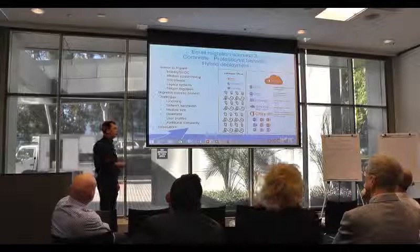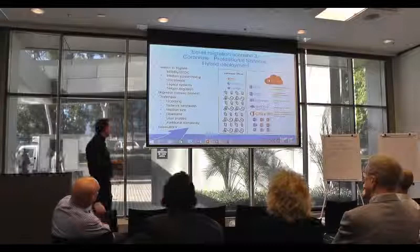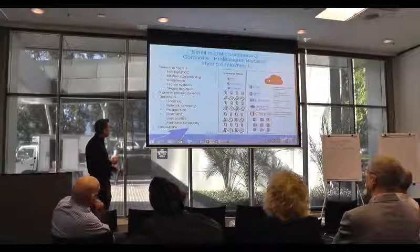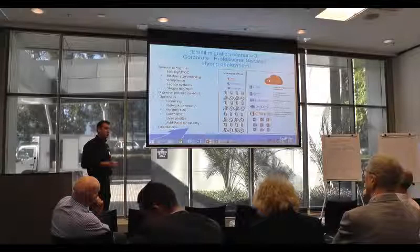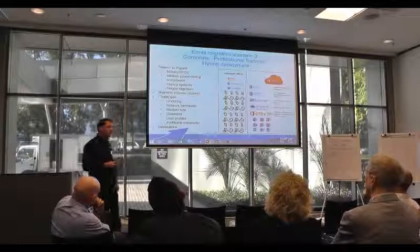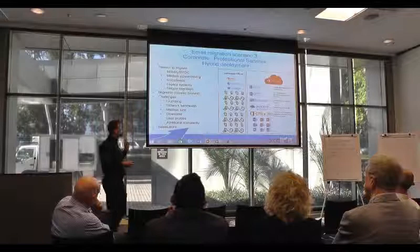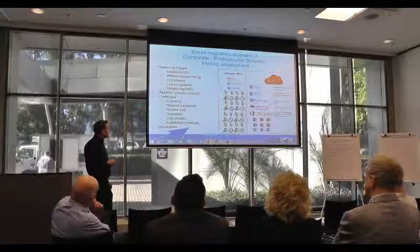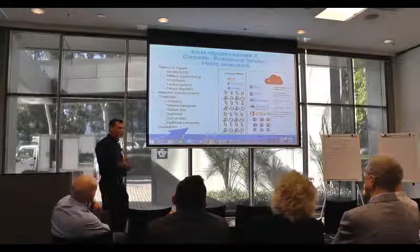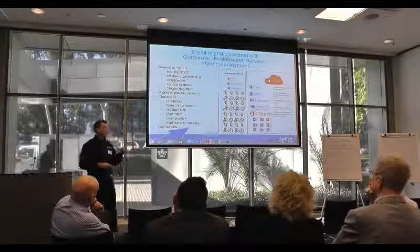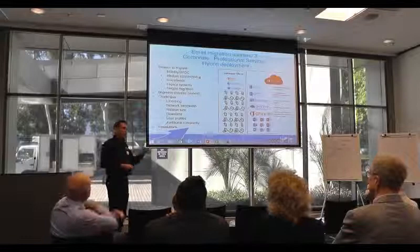Suddenly users can access cloud features that have been enabled. The challenges were again licensing, bandwidth, and mailbox size. Downtime is not a challenge with hybrid — it's essentially seamless. User profiles don't need to be reconnected for Outlook users, though some mobile devices would still need reconnecting. The biggest challenge is the additional complexity — while it enables staged migration with no downtime and cloud integration, it requires additional maintenance going forward, which had to be factored into the infrastructure team's workload.